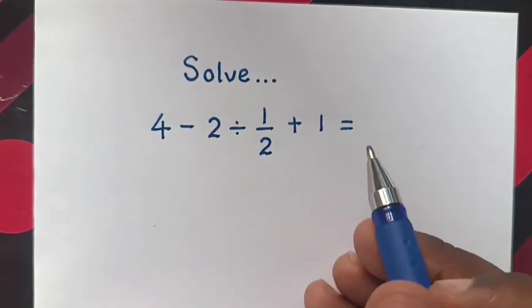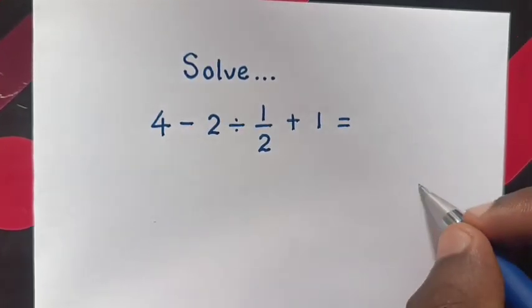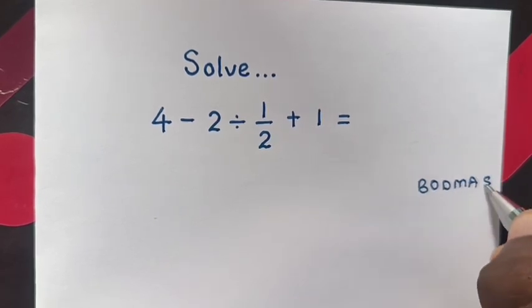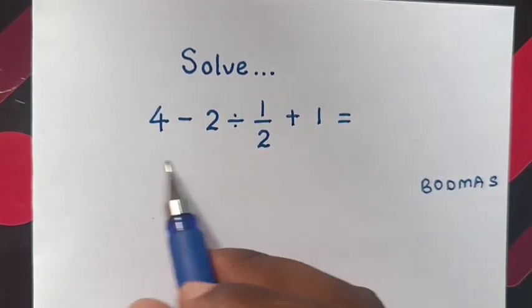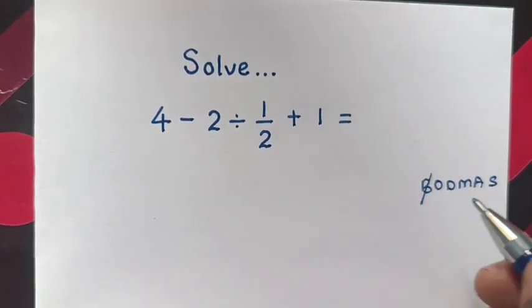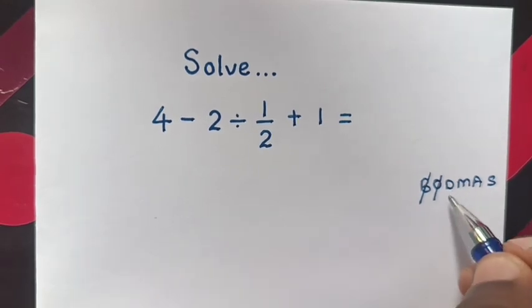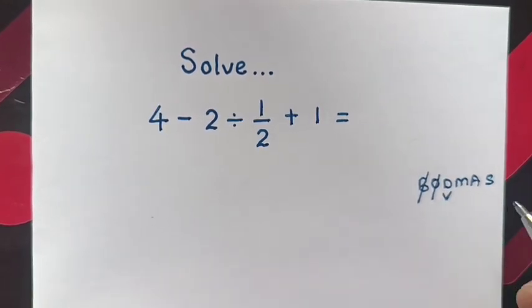So from this problem, we will use BODMAS rule, whereas in this problem there is no B, which is bracket. Also, there is no orders or exponents, but there is division.